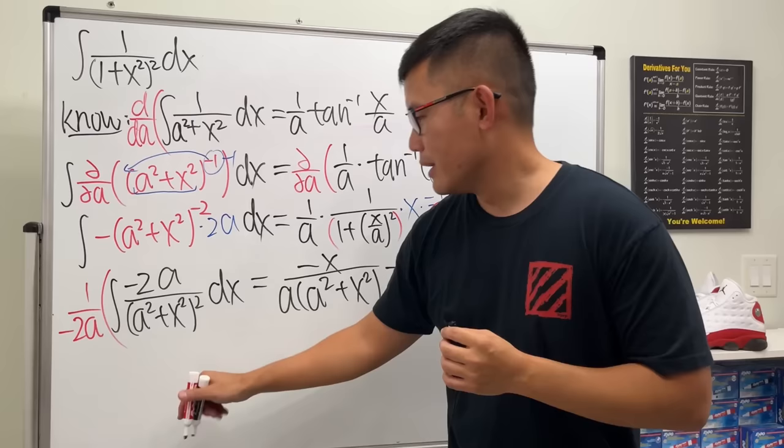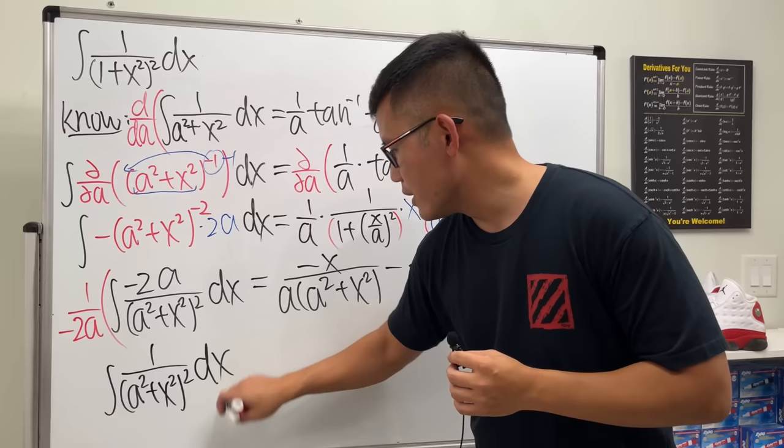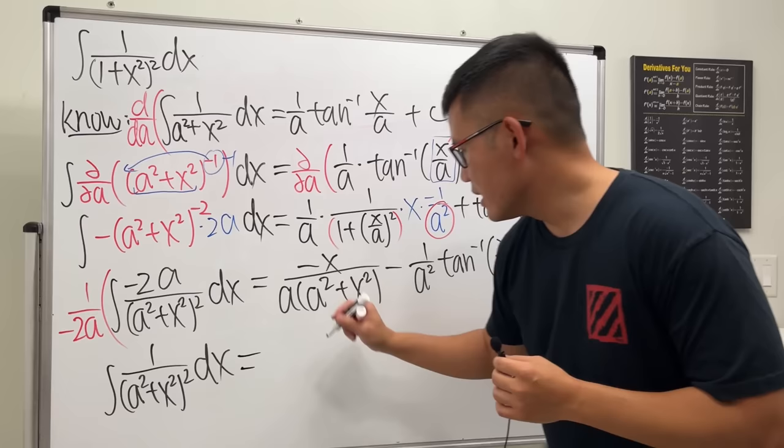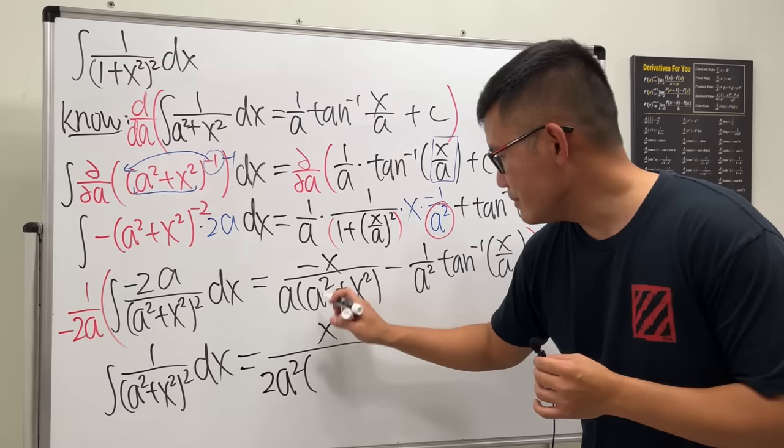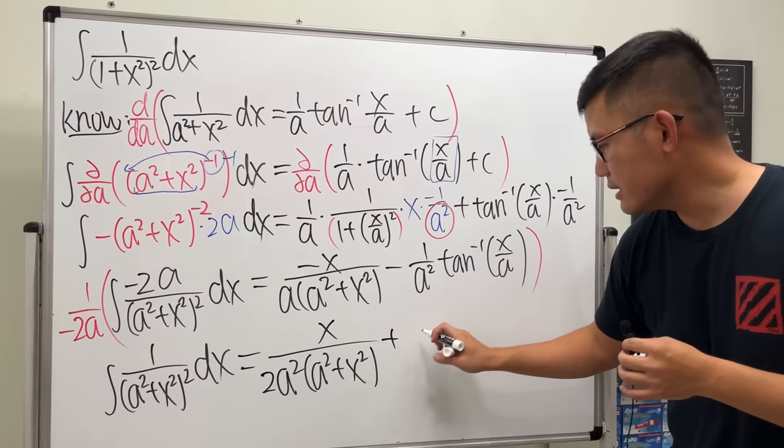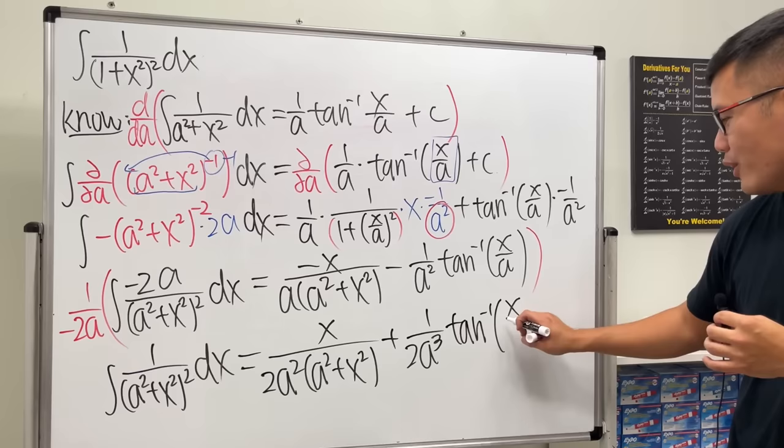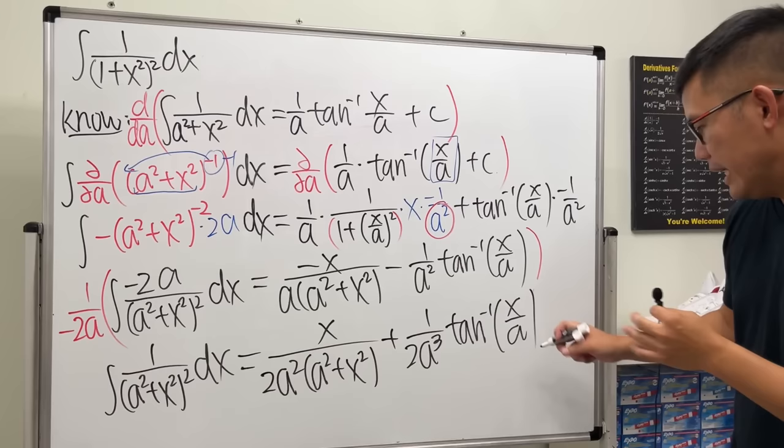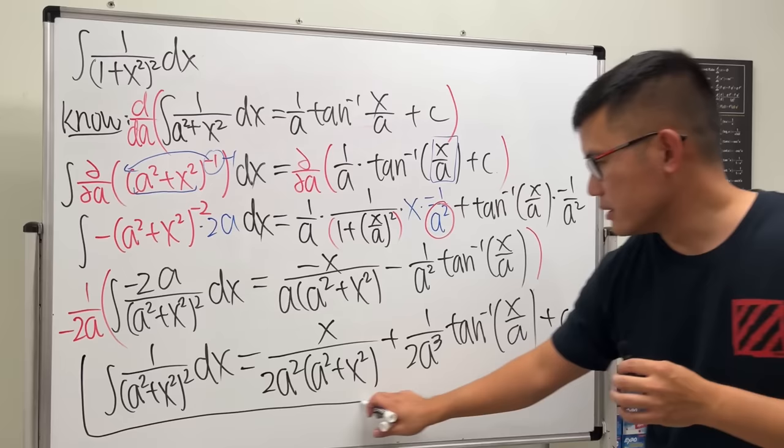So finally, the integral of 1 over (A² + x²)² dx—no partial fraction, no trig sub—differentiation under the integral sign gives us: negative negative becomes positive, we have x on the top over 2A² times (A² + x²), and negative negative becomes positive 1 over 2A³ times inverse tangent of x over A. How cool is this? And because we are talking about a formula and this is an indefinite integral, at the end I will put down plus C. So ladies and gentlemen, this is a very nice formula with this approach.